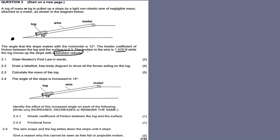While the log moves up the slope with a constant velocity — key word: constant velocity. So if there's a constant velocity or the object is stationary, this is Newton's First Law. The moment you have acceleration, it's the Second Law. So here we apply the First Law because of the constant velocity.